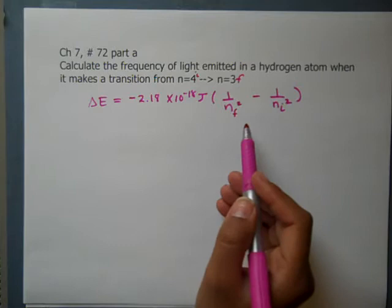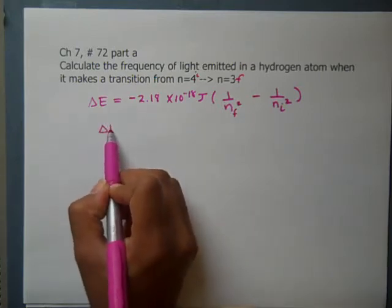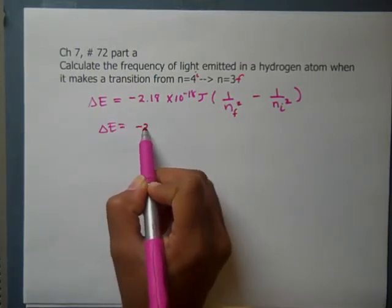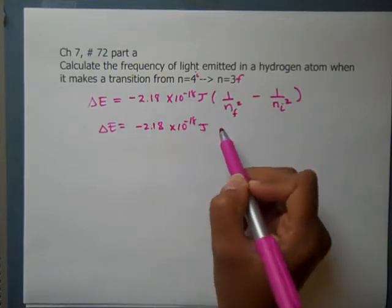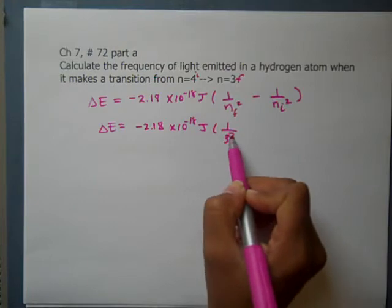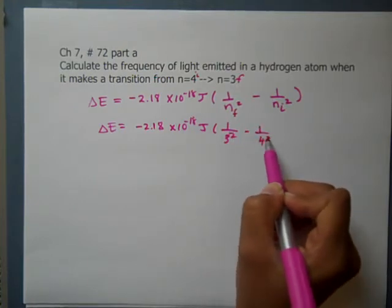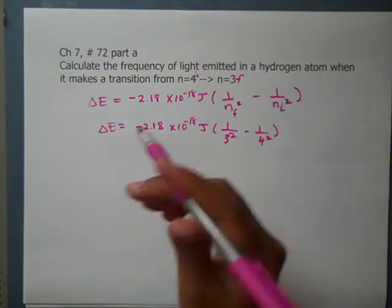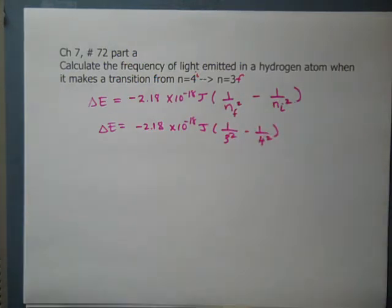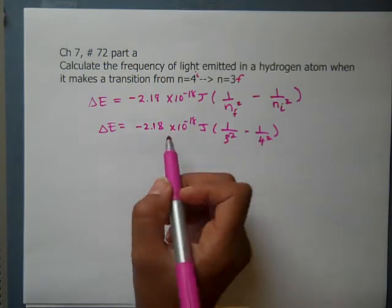We're going to plug it into the formula. Remember the exponent is negative 18. We get 1 over 3 squared minus 1 over 4 squared. When you do the math, 1/9 minus 1/16, this is still a negative number overall.